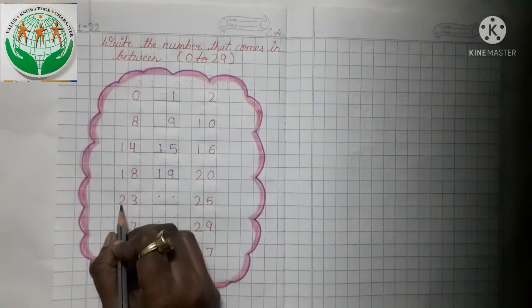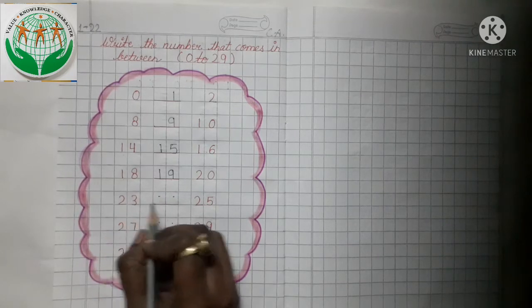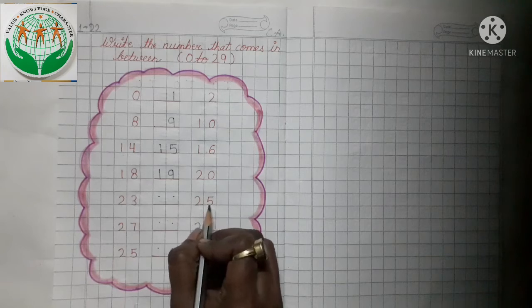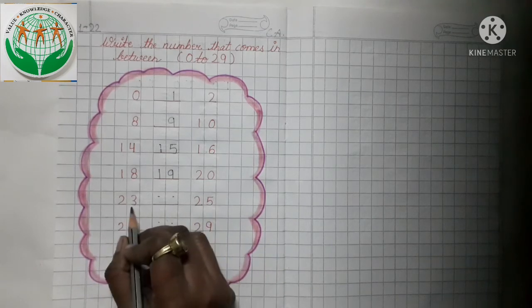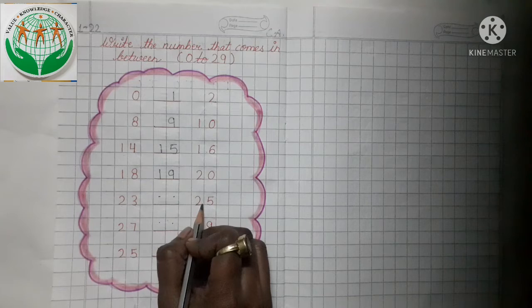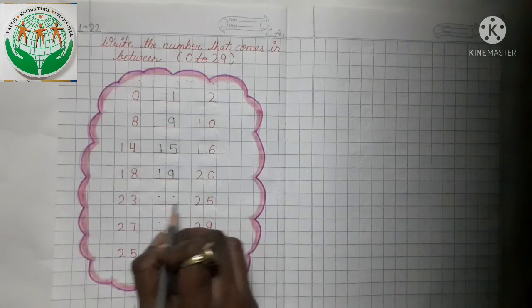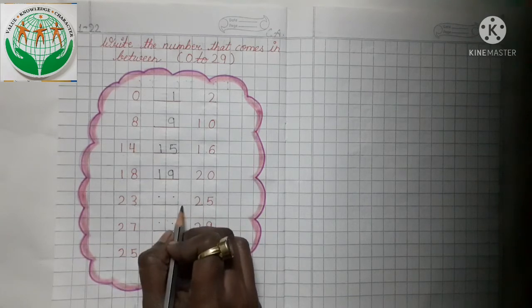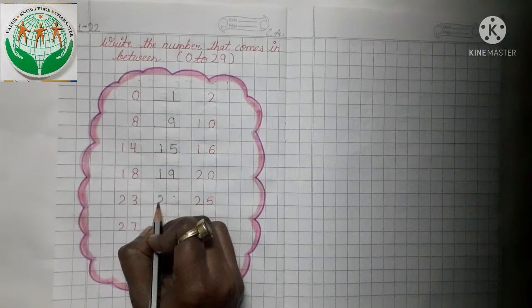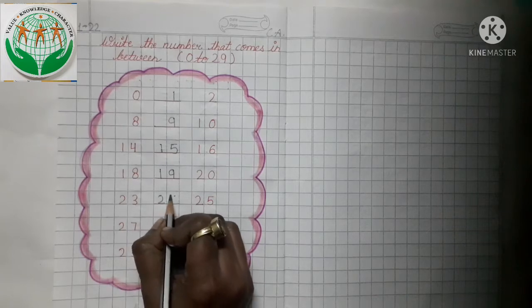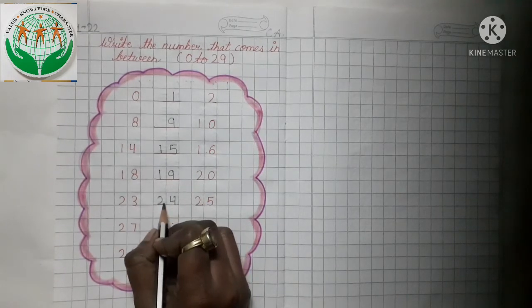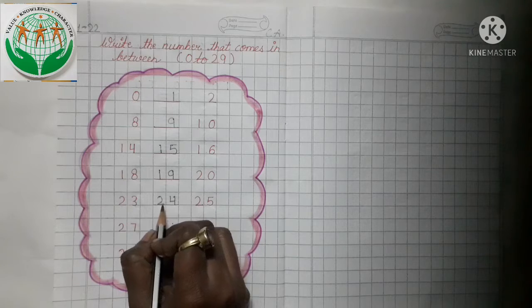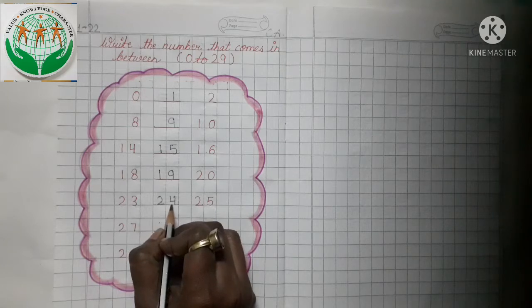This is number 23 and this is 25. Now tell me what comes between 23 and 25. Yes — 24. So we write here number 24.